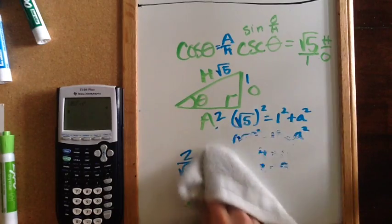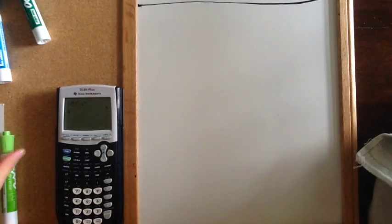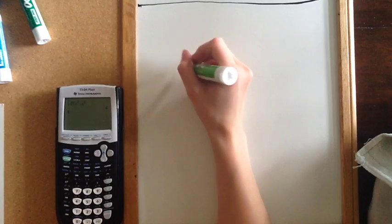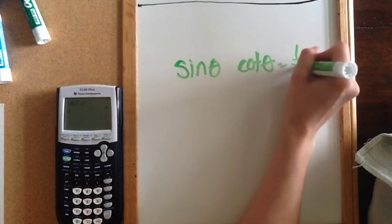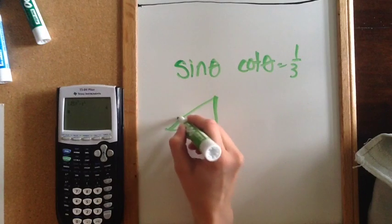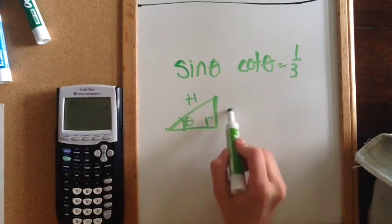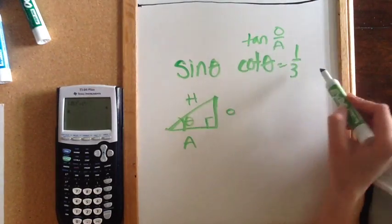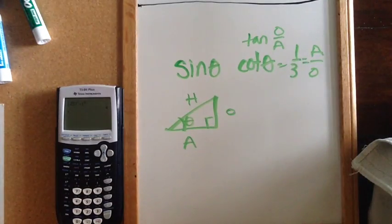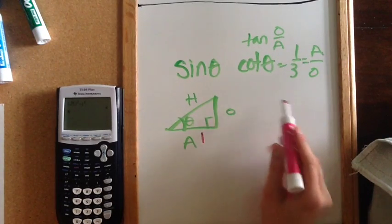Let's try one more. On this one, we want to find the sine of theta if the cotangent of theta is 1/3. I draw my triangle, label one angle that's not the 90-degree angle as theta, and label my triangle: hypotenuse, opposite, and adjacent. The cotangent is the reciprocal of tangent — tangent is opposite over adjacent, so cotangent is adjacent over opposite. This means the adjacent is 1 and the opposite is 3.